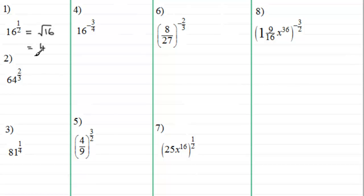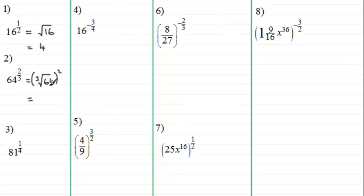Number 2: 64 to the power 2/3. With this one we look at the denominator first, which means we're taking the cube root. The cube root of 64 is 4, and then the 2 on the top means we square this result. So 4 squared — 4 times 4 — is 16.